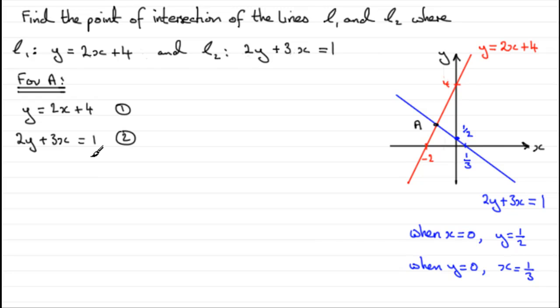I'll do the elimination at the end because for this example it seems to work better for substitution. Look, we've got y equals 2x plus 4, y in terms of x, so I could immediately substitute this into equation 2.